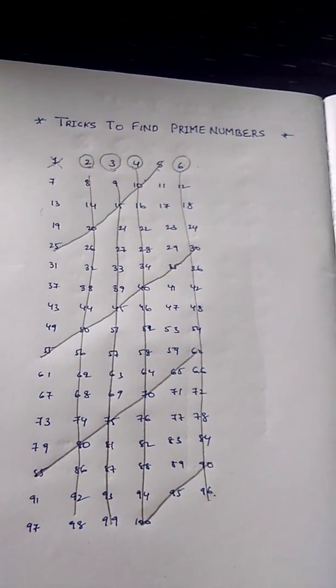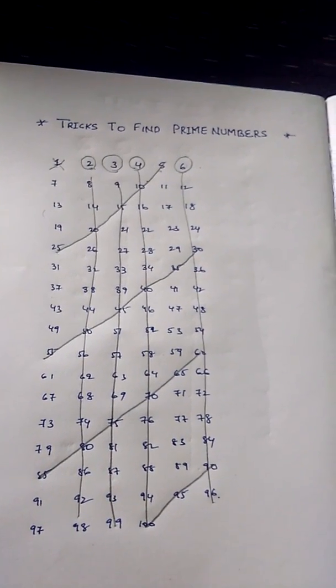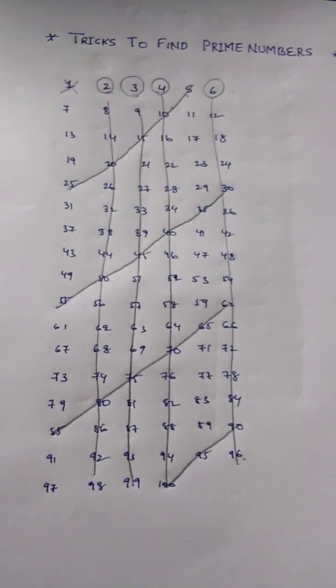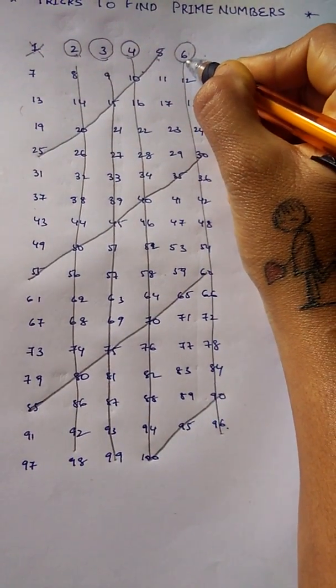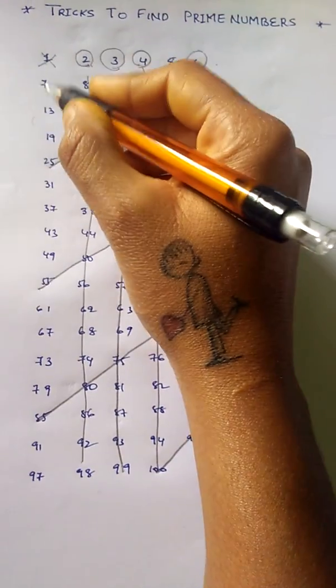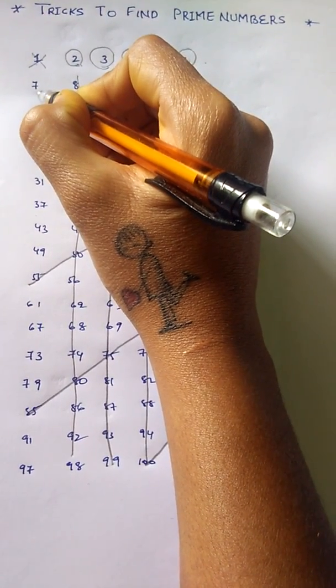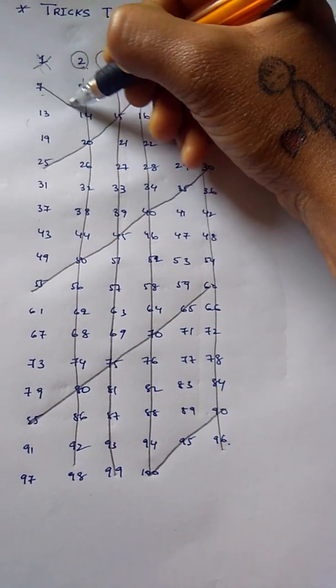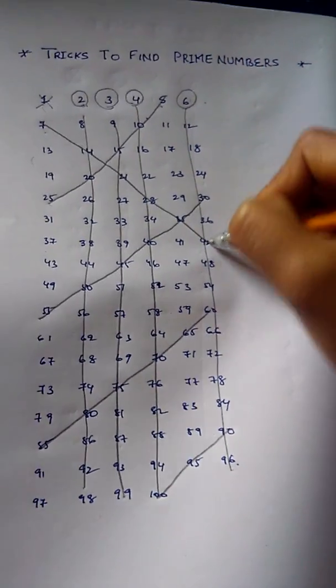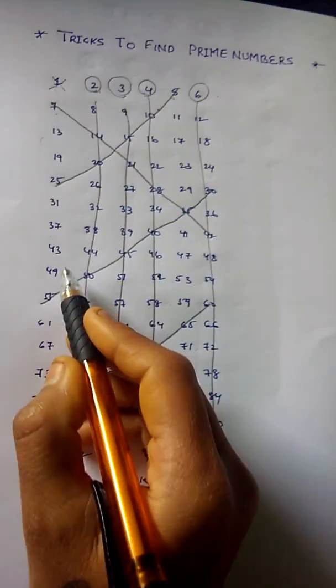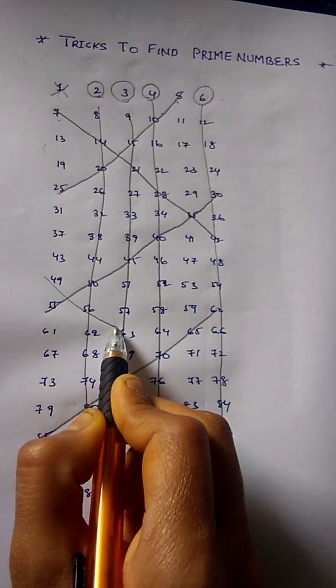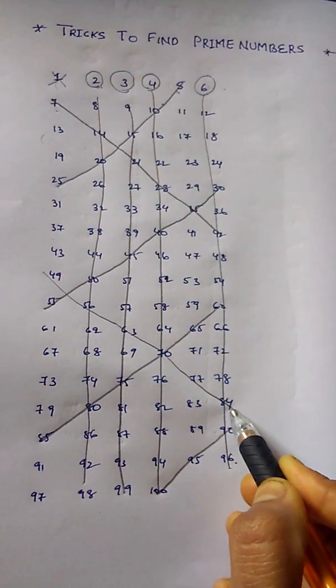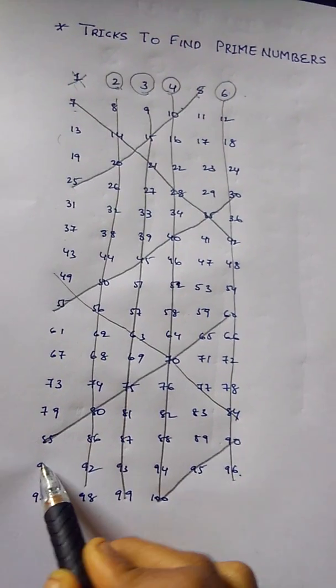So I have struck off all the numbers which are divisible by 5 as well. So now last step, 6 is already over, we move on to 7. Again, find the multiples of 7 diagonally: 7, 14, 21, 28, 35, 42, 49, 56, 63, 70, 77, 84, 91, and 98.